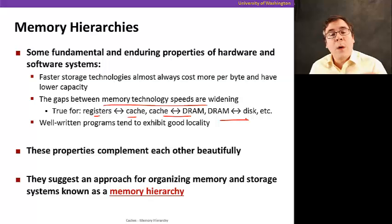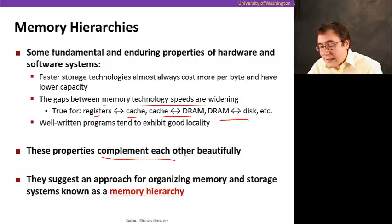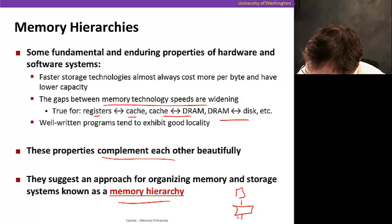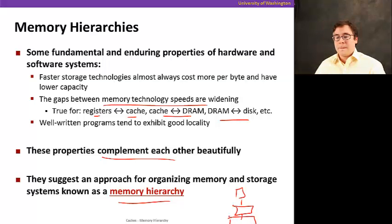And if well-written programs exhibit locality, that suggests that you can actually build progressively larger and slower memory hierarchies and still give the illusion from the processor point of view that the memory is most of the time pretty fast. So these properties really complement each other beautifully to form a large pool of memory that behave as if you were very fast if it was composed to a large extent by slow, large memory. So they really suggest organizing them in the form of a hierarchy. By that I mean we have one memory backed by another memory, backed by another memory, and so on.